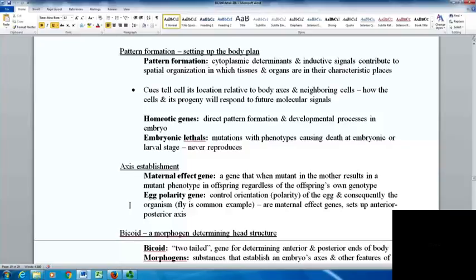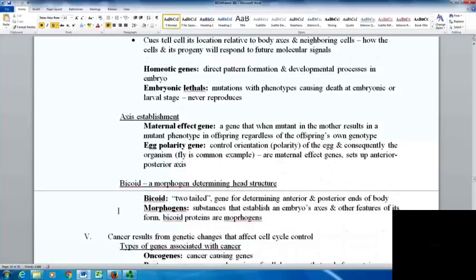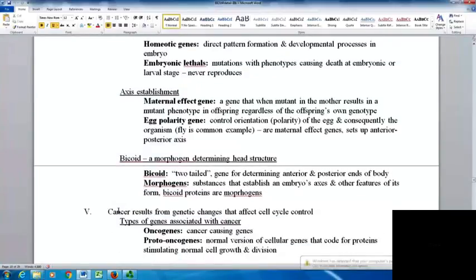This was studied in flies—their maternal effect genes set up the anterior and posterior axis. An example of morphogens, substances that establish the embryo's axes and other features of its form, are the bicoid proteins. Bicoid means two-tailed and is a gene for determining the anterior and posterior ends of the body.